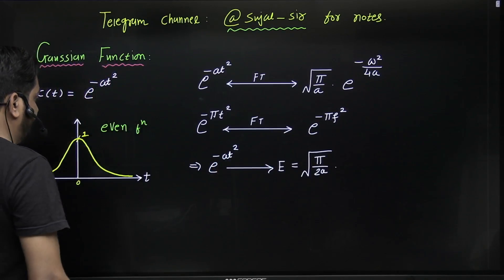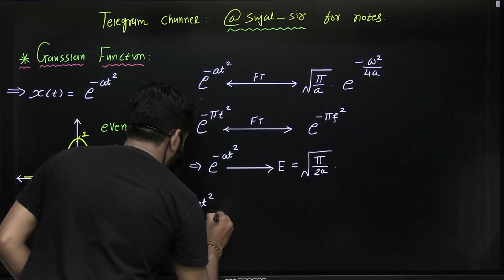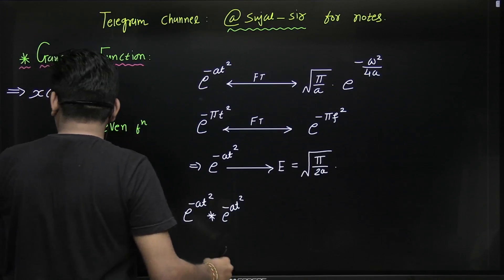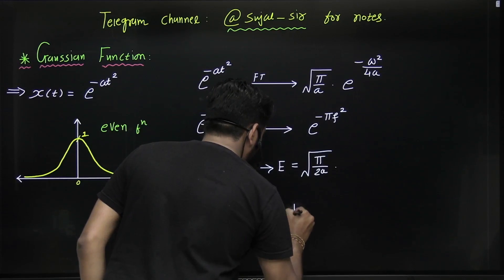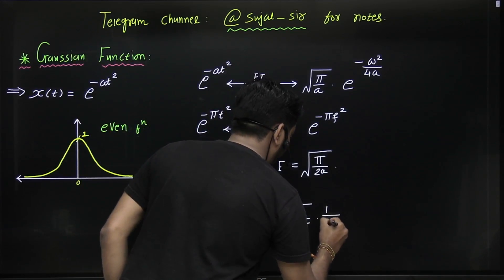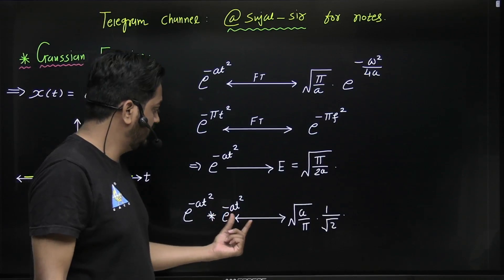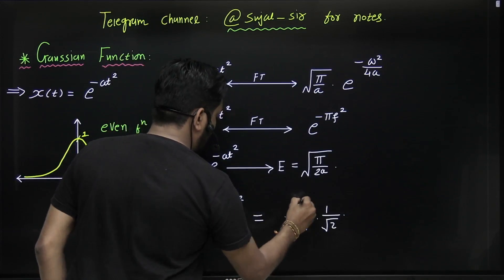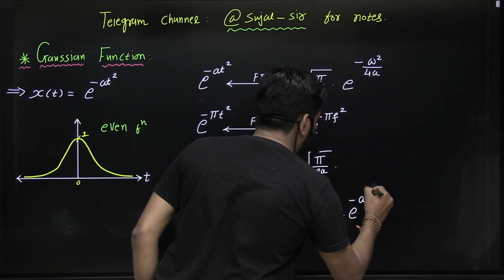If you do the convolution of the Gaussian function with itself — that is, e^(-at²) convolved with e^(-at²) — then the result is √(a/π) · (1/√2) · e^(-at²/2). So the convolution of a Gaussian with itself gives another Gaussian function.